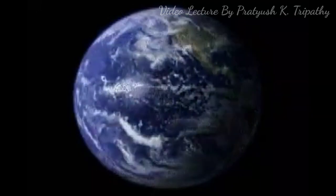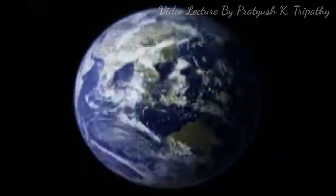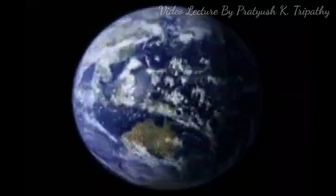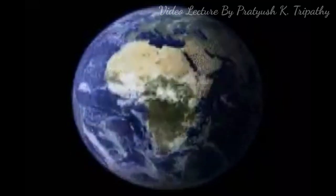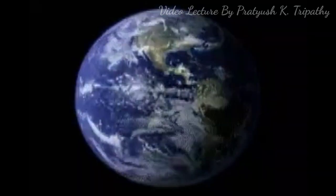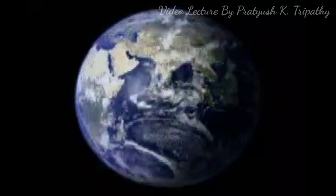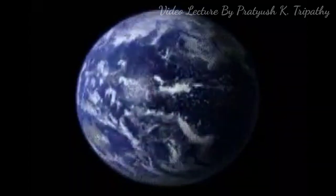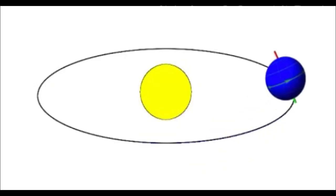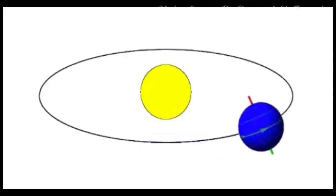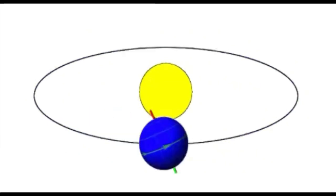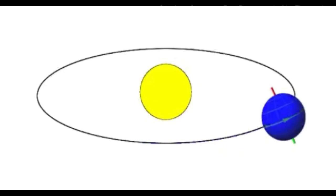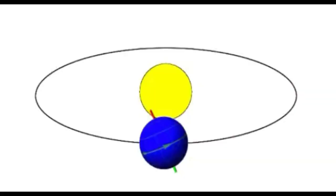The movements of the Earth. The primary movements of the Earth are rotation and revolution. Rotation is when the Earth rotates around its own axis from west to east once in 24 hours. This movement causes day and night. Revolution is the Earth revolves around the sun making one complete revolution in approximately 365 and one-fourth days.